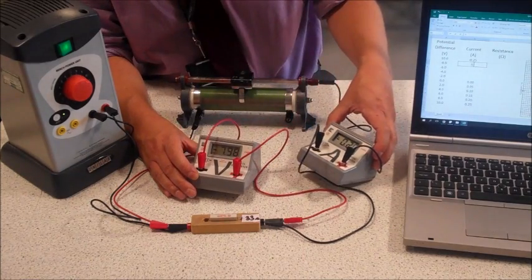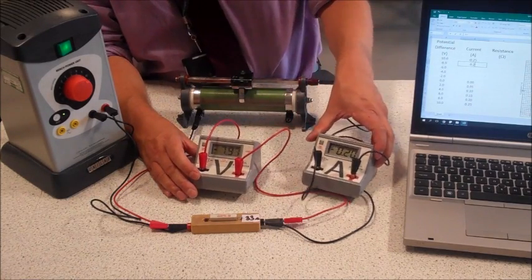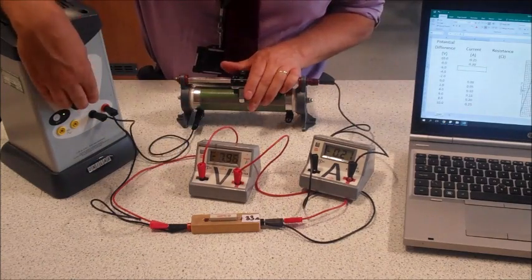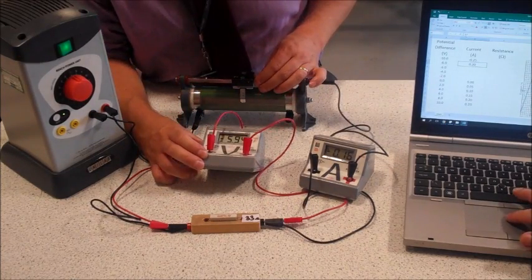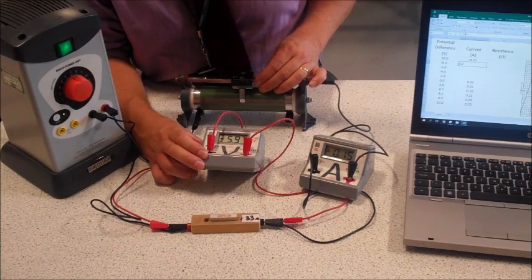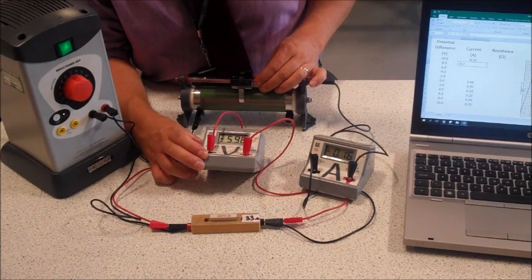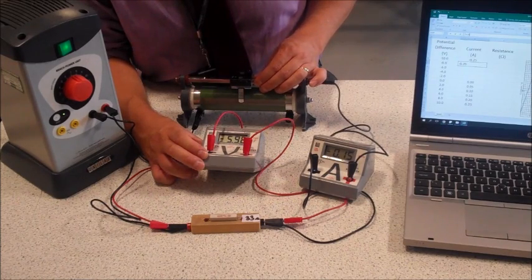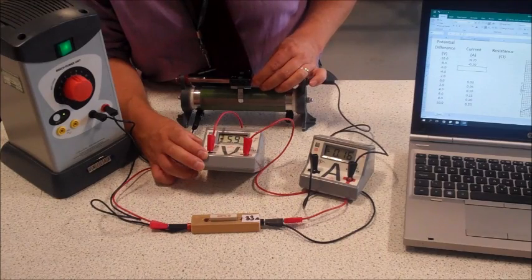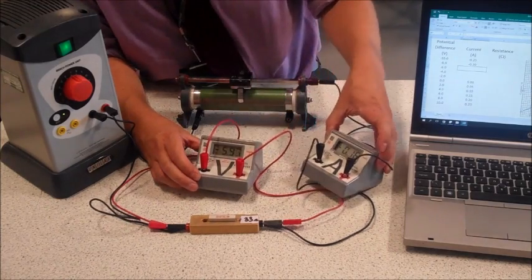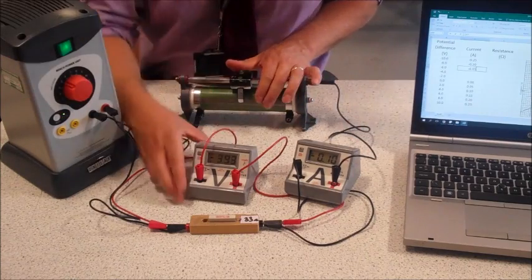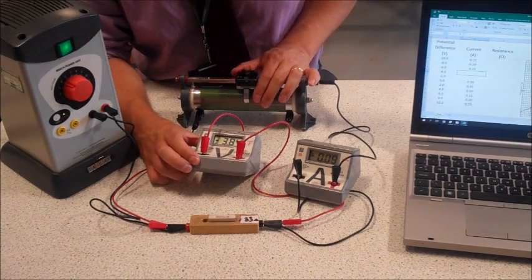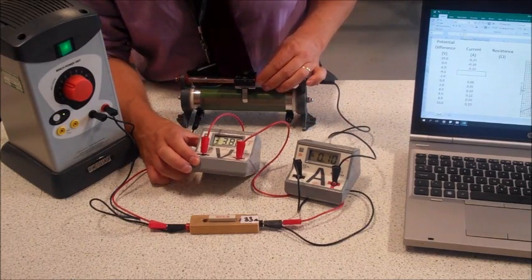Okay, minus eight, we've got about minus 0.20 amps. And then we'll go for minus six volts. Okay, minus six volts, we've got minus 0.15 amps. And then we'll go to minus four volts.